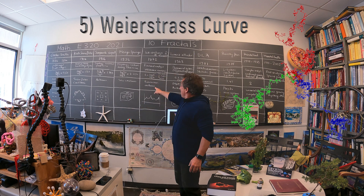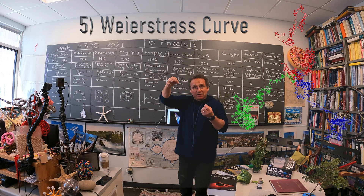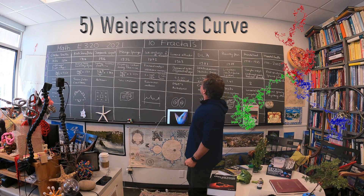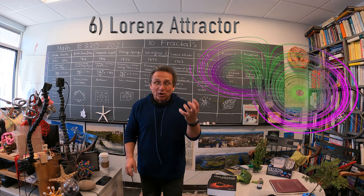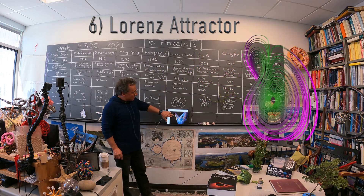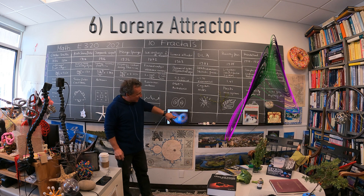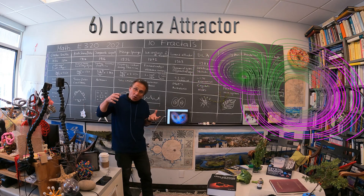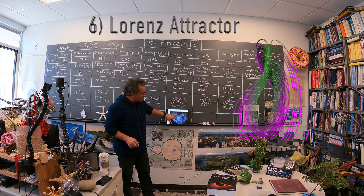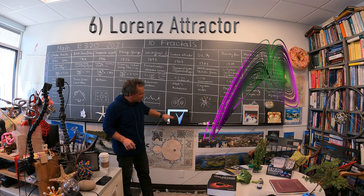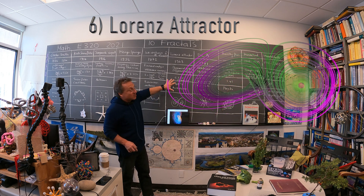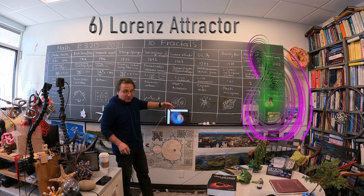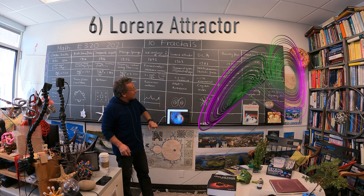Also, Brownian motion: most of the paths you see of a particle in the air have this fractal structure. The Lorenz attractor — we'll talk more about chaos in the coming weeks. It is defined as a differential equation, and what you see is that the orbits accumulate on an object which is fractal, has a fractal shape, with dimension numerically between 2 and 3. It is also related with turbulence — what we call the strange attractor.